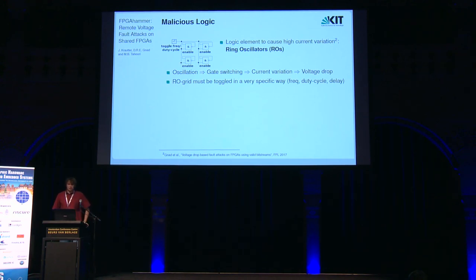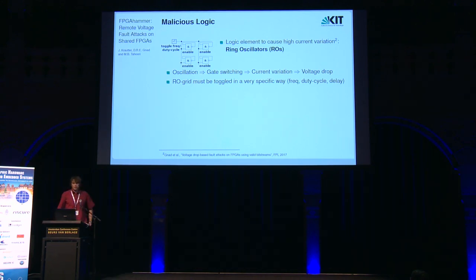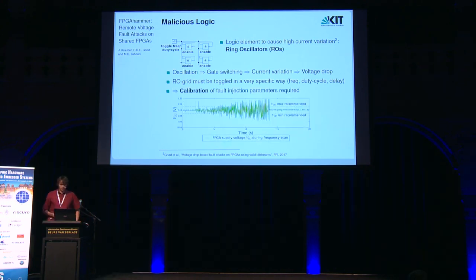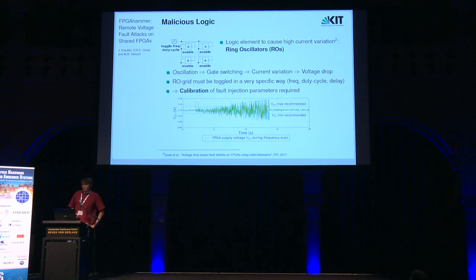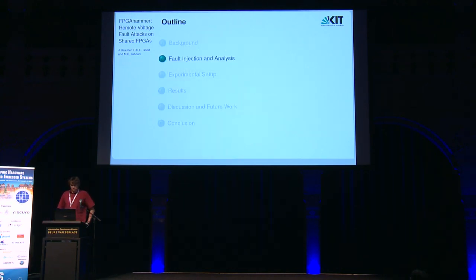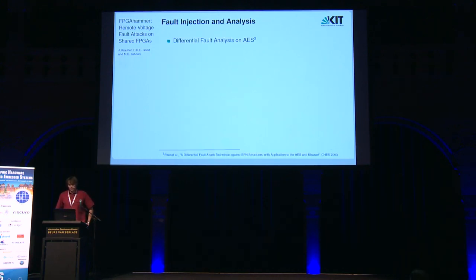We found that it's not enough to just switch the ring oscillator grid on and let it oscillate — it must be toggled in a very specific way. We identified three parameters that affect fault injection success: the frequency, duty cycle, and initial delay of the toggled signal. In this diagram, you can see the externally measured supply voltage of the FPGA while decreasing the toggle frequency in the area between the red bars.